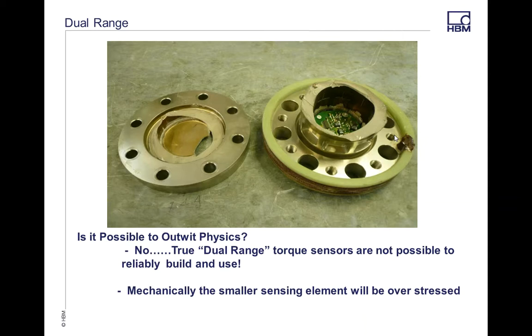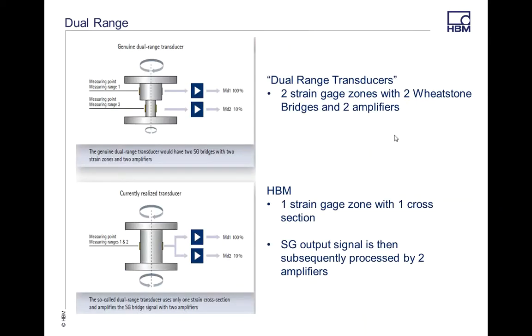You really can't outwit physics. So how do we do this? On the top, I've mentioned some transducers. They have a dual range with two strain gauges, two Wheatstone bridges, and two different amplifiers for two different diameters. Outside diameter and inside diameters, because they have to try to push the strain gauges through that. So that's going to be your weakest link, like I mentioned.